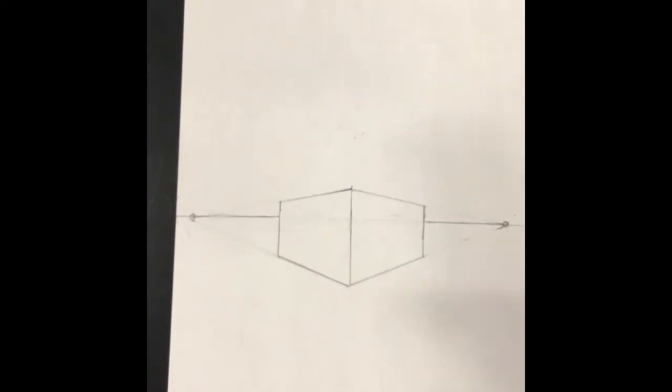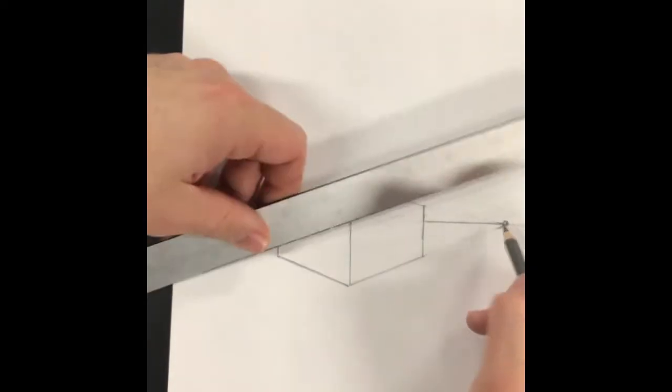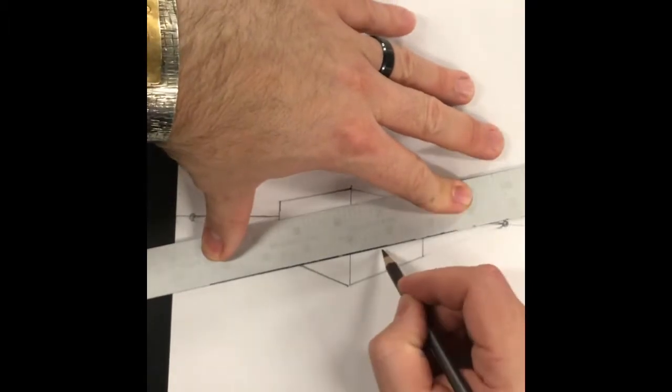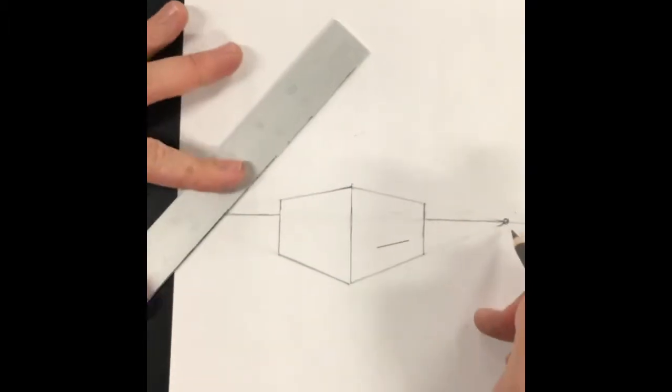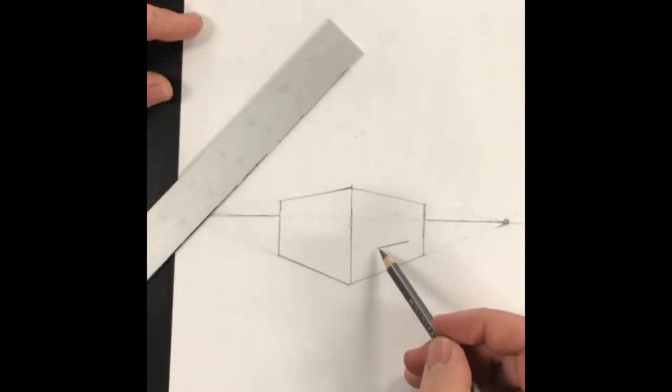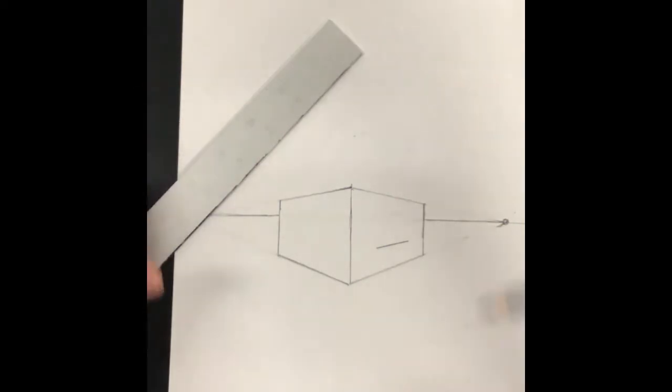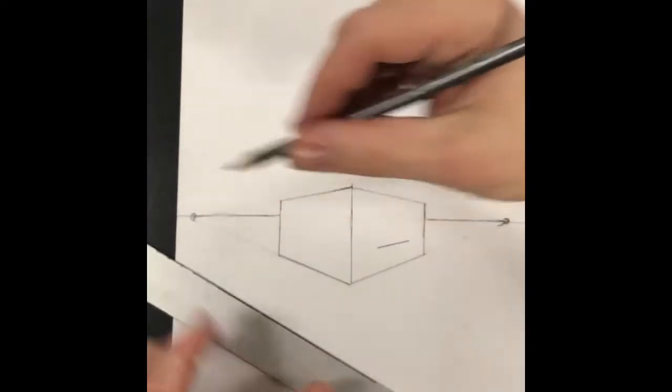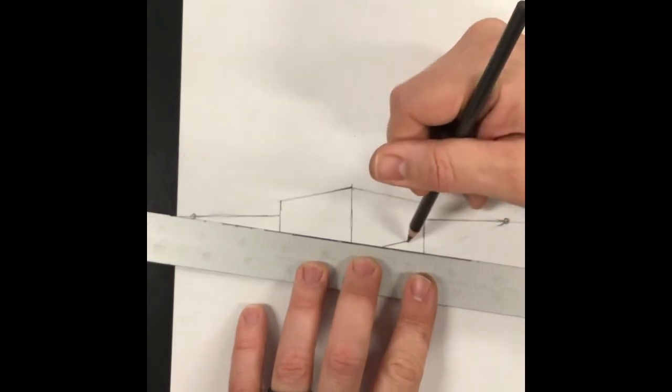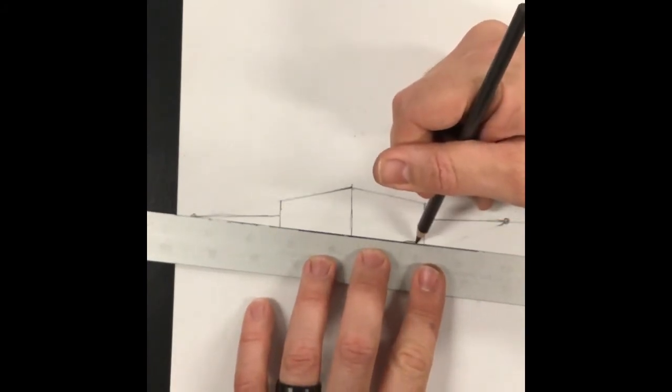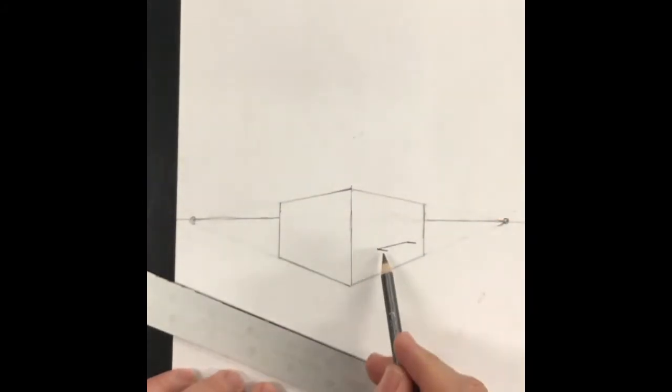The first way, which I'll do on the right side here, would be on your structure, make a line from your right vanishing point. This is going to be like the top back part of the step that connects to this object. Then I go over to the left vanishing point and I create two lines that come off of that. Notice both of those extend all the way to that point.